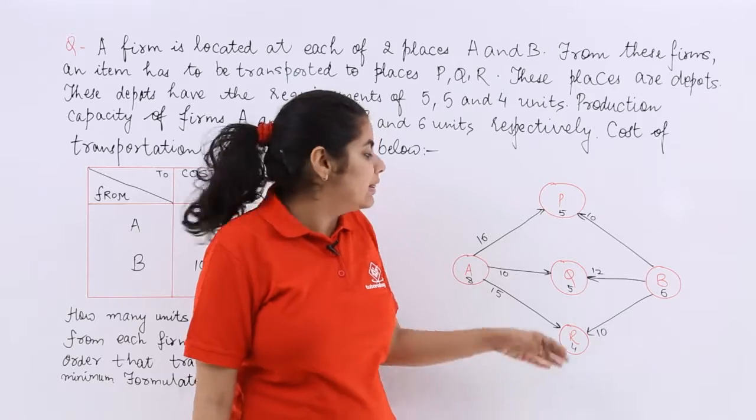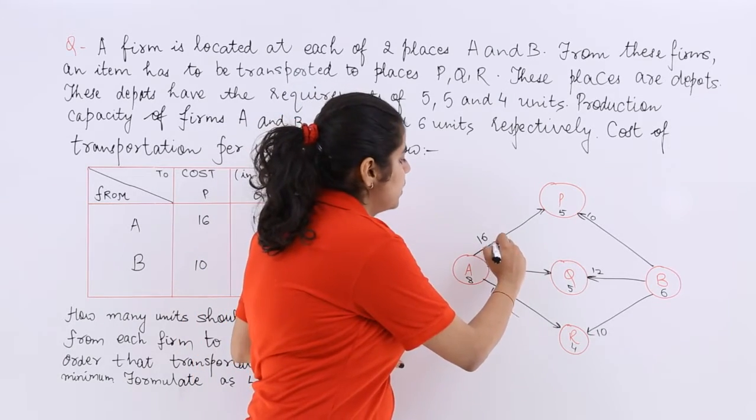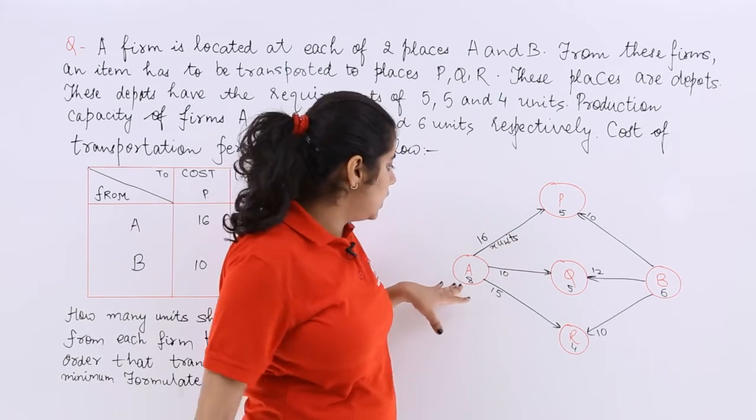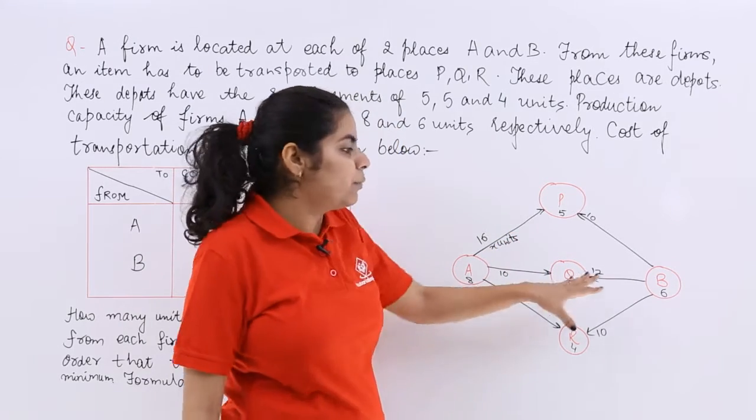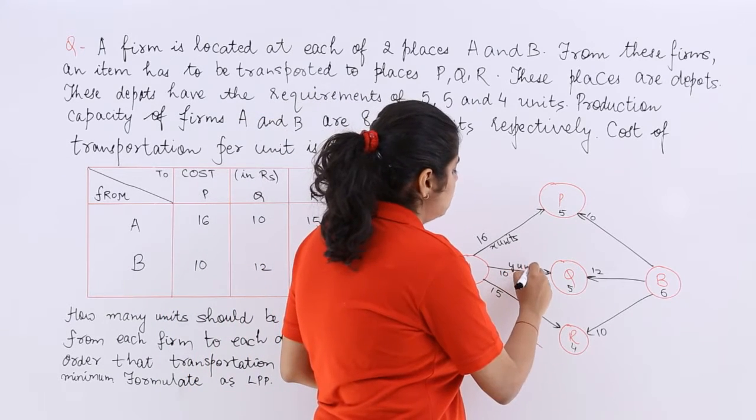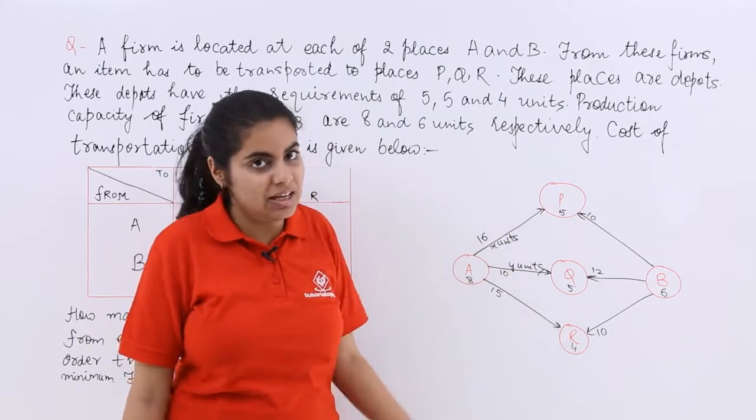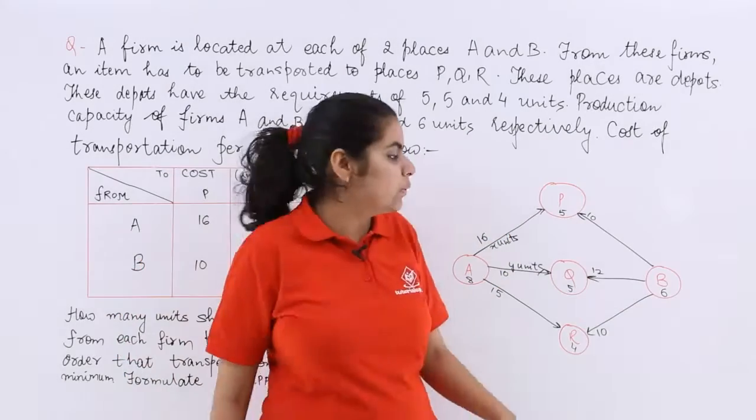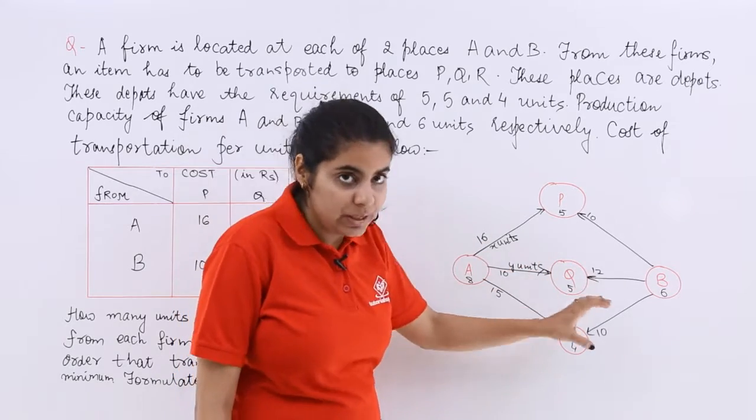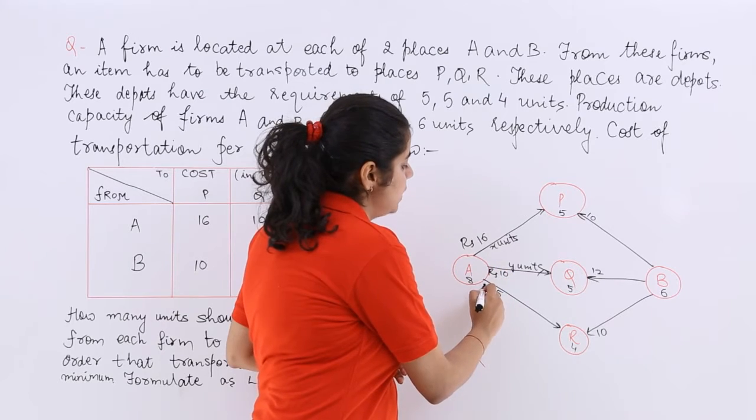Now I assume that from A to P, X units are being transferred. Here I assume that from A to Q, Y units are being transferred. And now when I know about the X units and Y units then I also know that X units and Y units corresponds to the units while this 10, 16 are rupees.